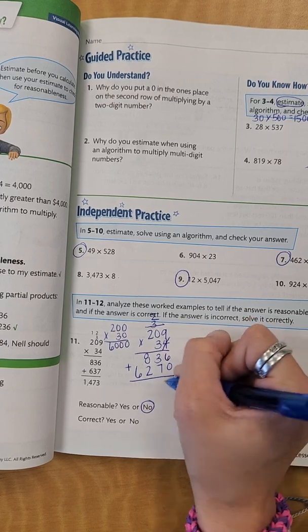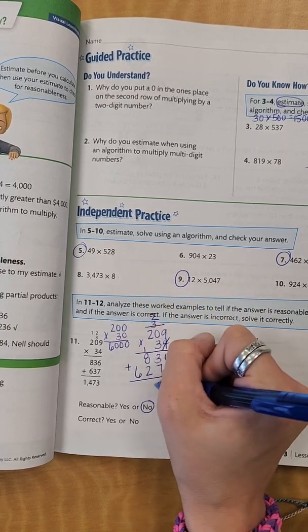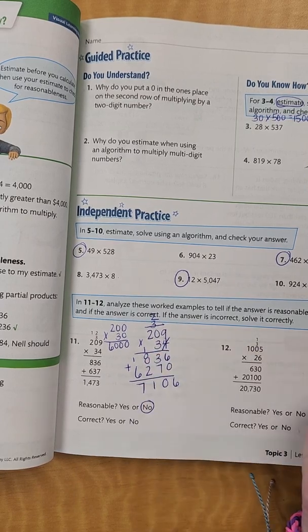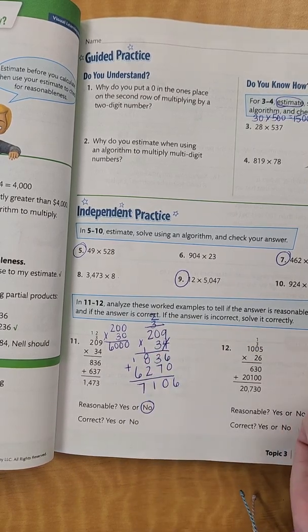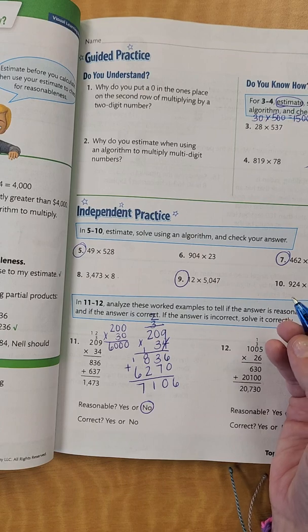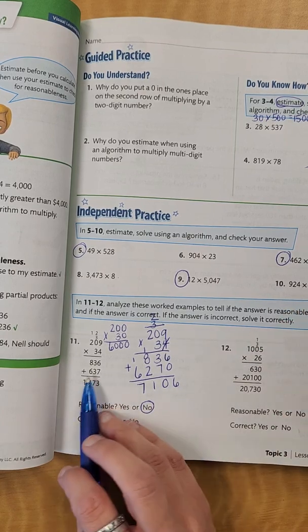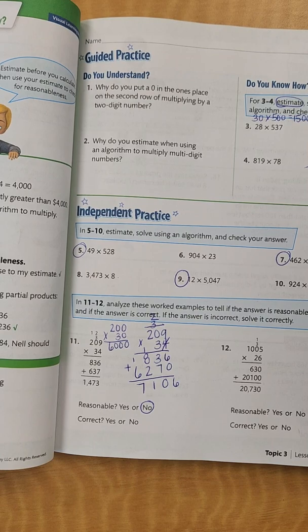Now let's add it up. That's 6, that's 10, regroup. That's 11, regroup. That's 7. So 7,106 would be my actual answer. So it looks like what they did over here is they didn't put the 0 down, and they made a simple calculation error.